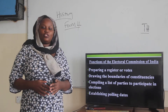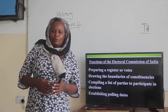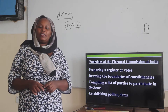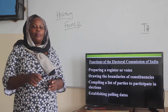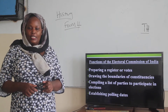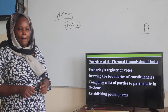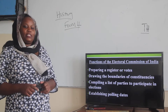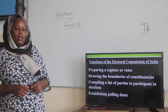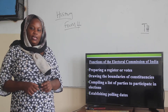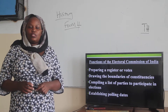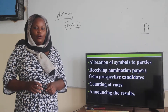They also compile a list of parties to participate in the elections. When you want to register your party, you normally go to the Electoral Commission to be registered as a political party. They also establish polling dates — they are the ones who give the dates when the elections can be conducted.